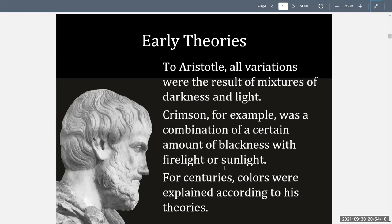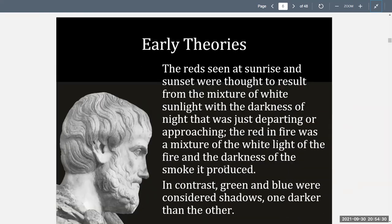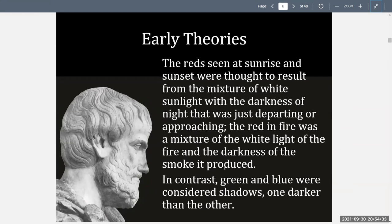Crimson, for example, was a combination of a certain amount of blackness with firelight or sunlight. For centuries, colors were explained according to his theories. The reds seen at sunrise and sunset were thought to result from a mixture of white sunlight with the darkness of night that was just departing or approaching. The red in fire was a mixture of the white light of the fire and the darkness of the smoke it produced. In contrast, green and blue were considered shadows, one darker than the other.